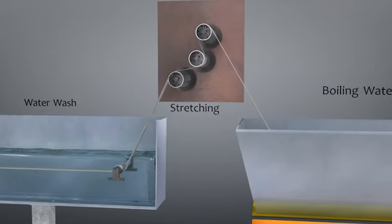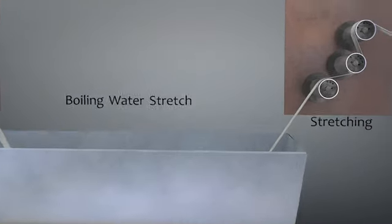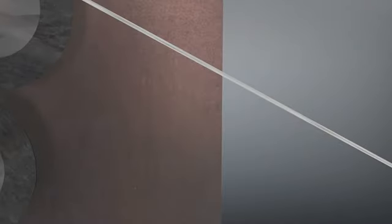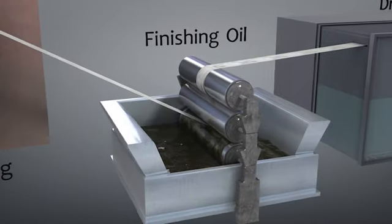The filaments continue through repeated steps of stretching and this time a boiling wash. The cross-section of the filament continues to hold its shape as the diameter collapses and it becomes less porous.